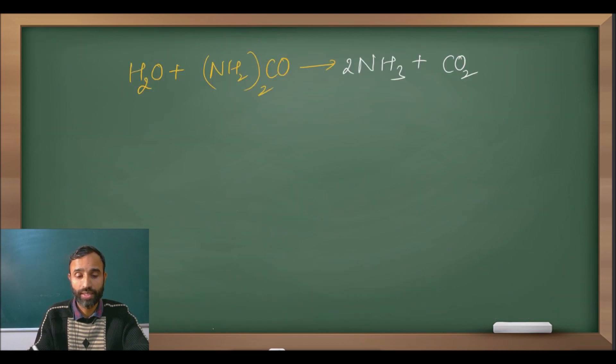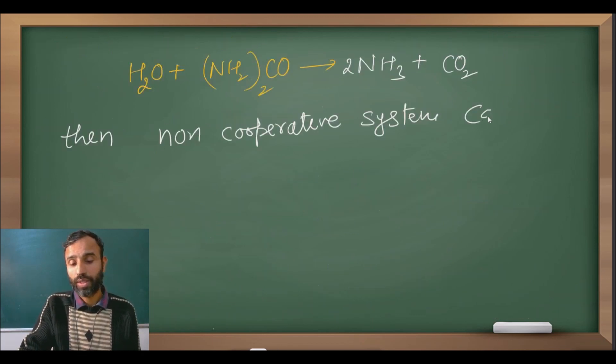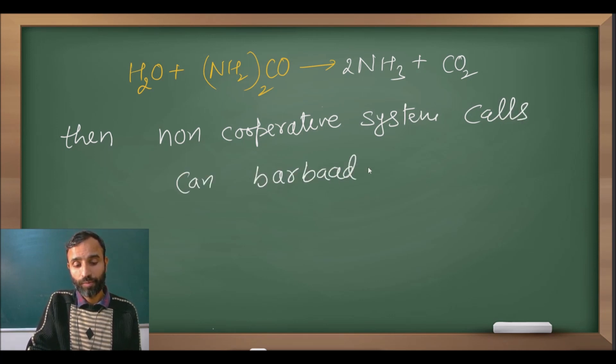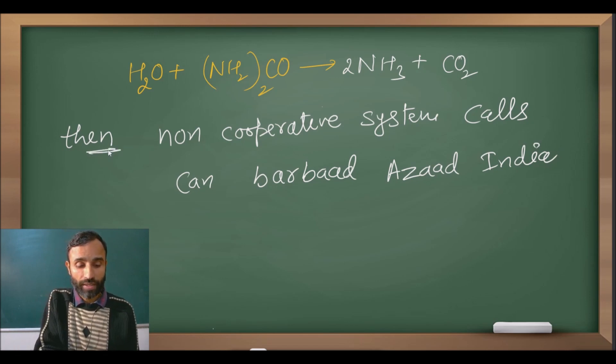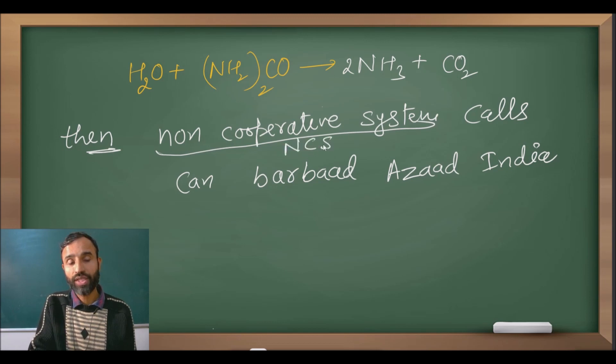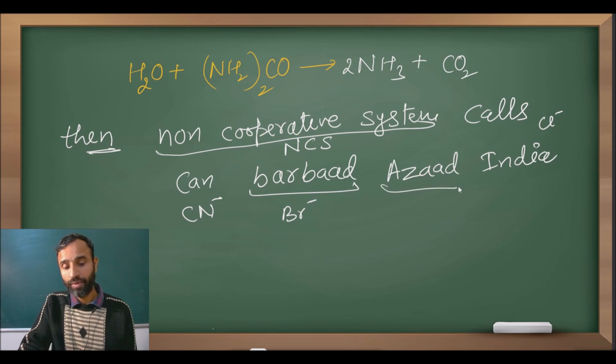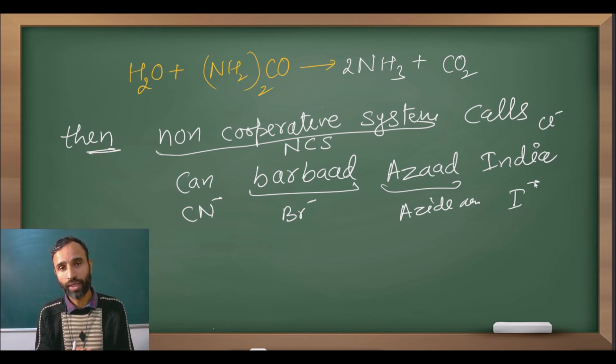For EN you can write: non-cooperative system calls can, Shribad, Azad, India. Then EN, non-cooperative system NCS calls Cl negative, can CN negative, Shribad Br negative, Azad azide N3 negative, and India I negative. So that's the whole scenario. You can remember it like first add water to urea to form ammonia, then non-cooperative system calls can Shribad Azad India. This is the trick to remember your nepheloxetic series for ligands.